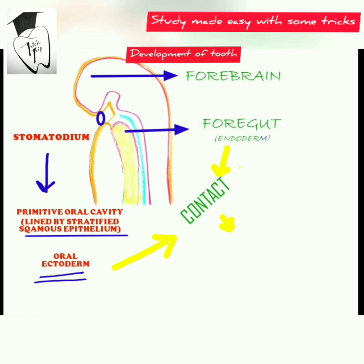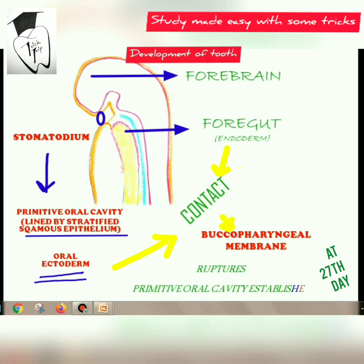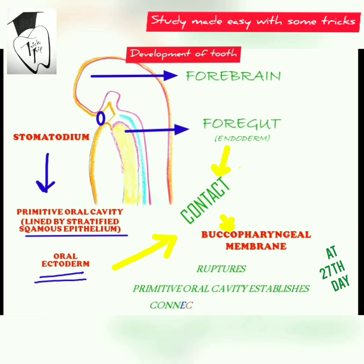The oral ectoderm contacts the endoderm of the foregut to form the buccopharyngeal membrane. At the 27th day of the gestation period, the buccopharyngeal membrane ruptures and the primitive oral cavity establishes its connection with the foregut.